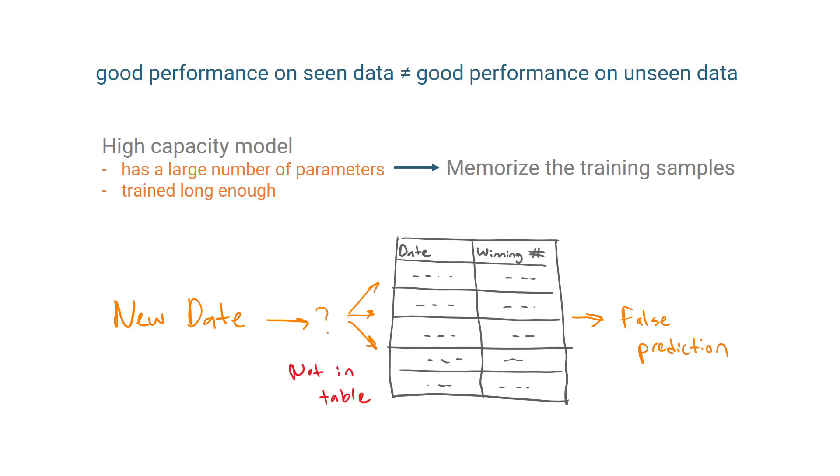This disparity between the performance on the seen and previously unseen data is called the generalization gap. It's common in machine learning problems to observe a gap between the training and test performance.